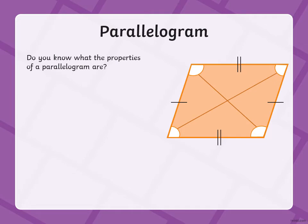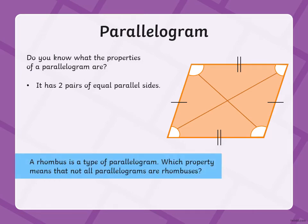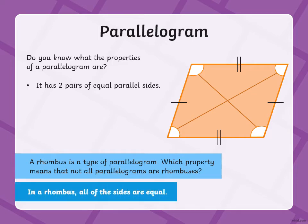Okay, let's have a look at a parallelogram. It has two pairs of equal parallel sides. A rhombus is a type of parallelogram, which means that not all parallelograms are rhombuses. In a rhombus all of the sides are equal.